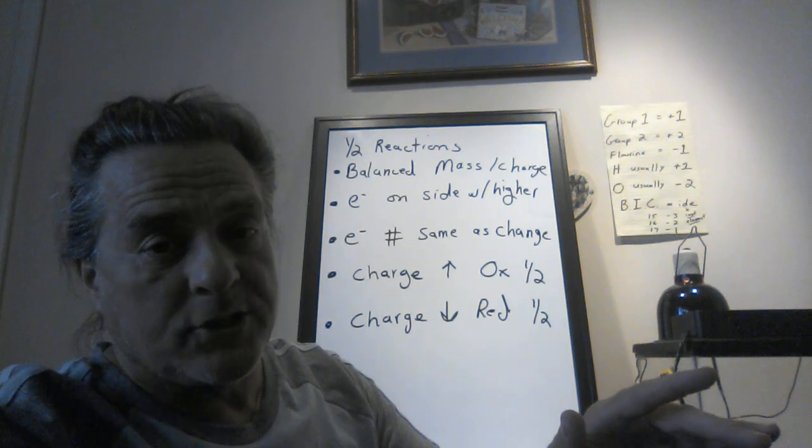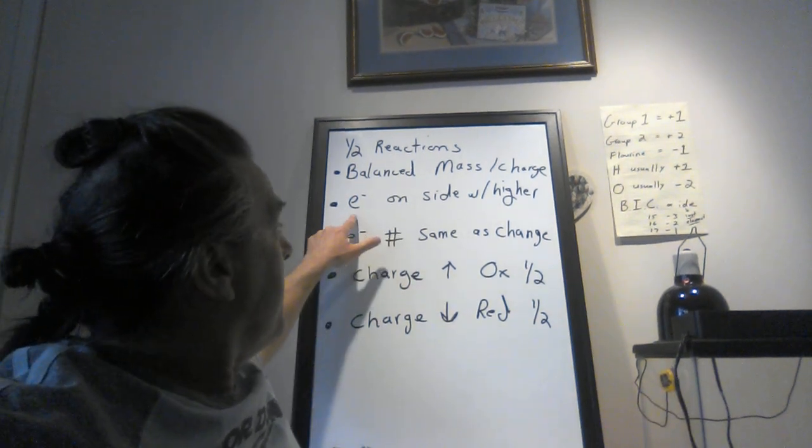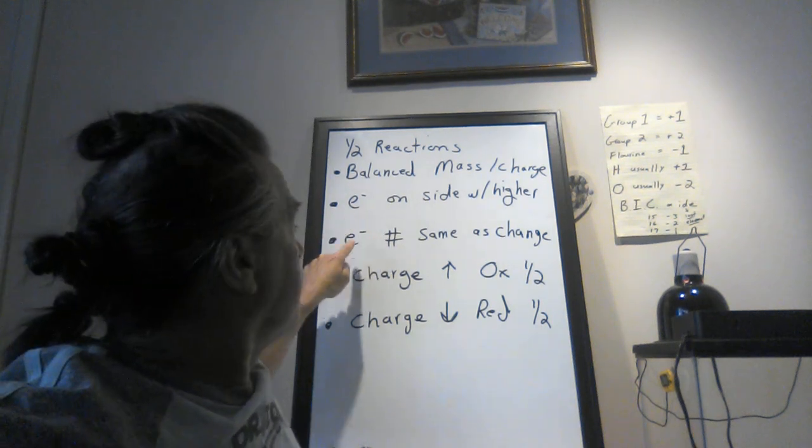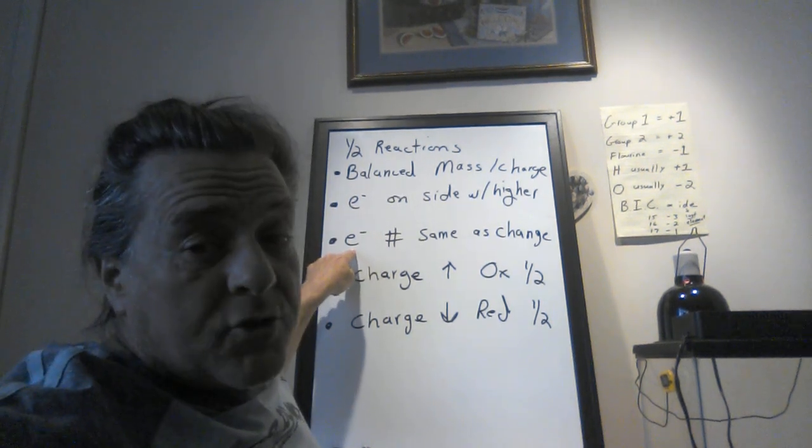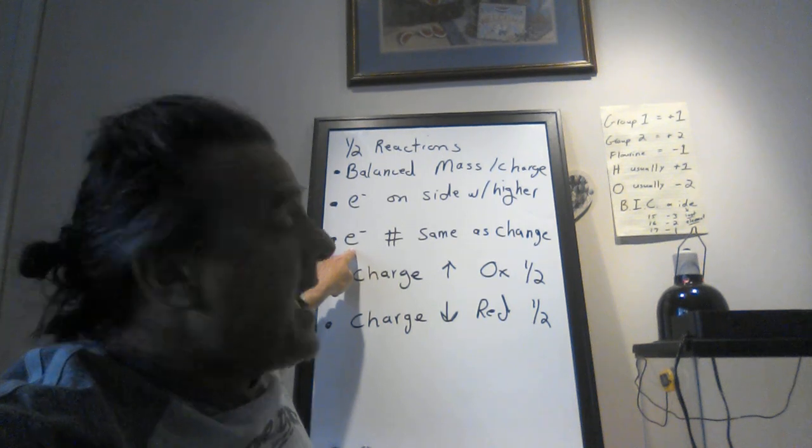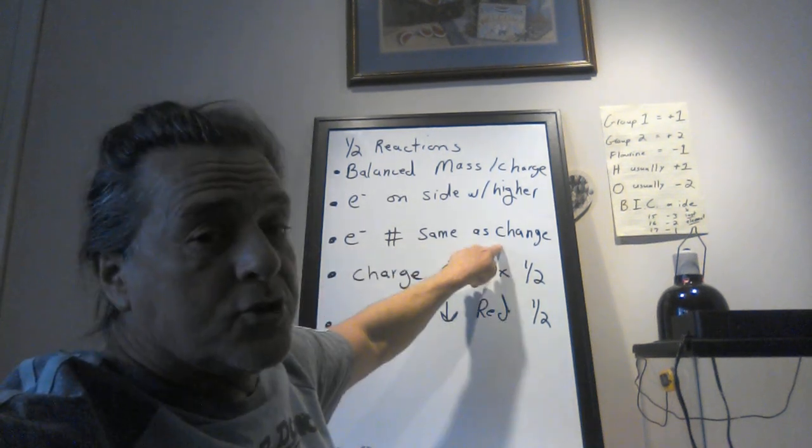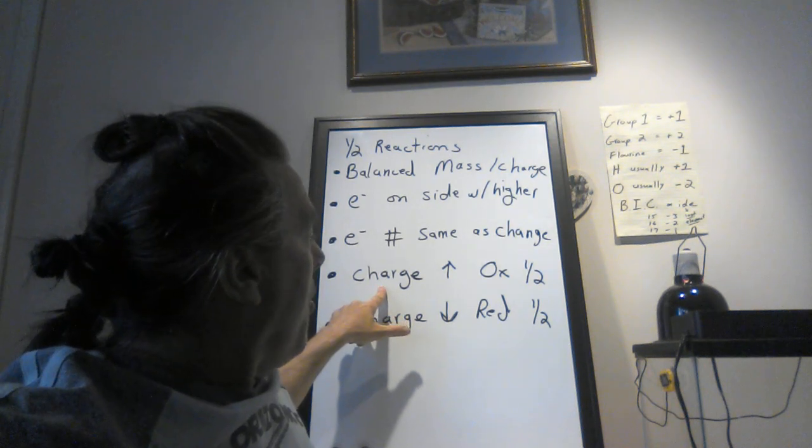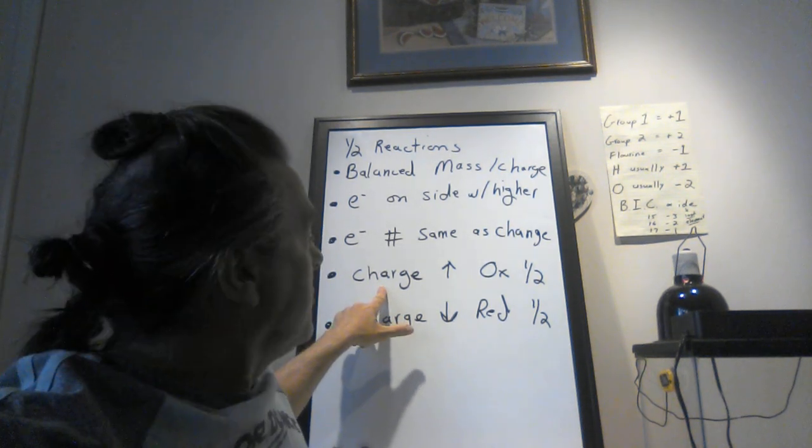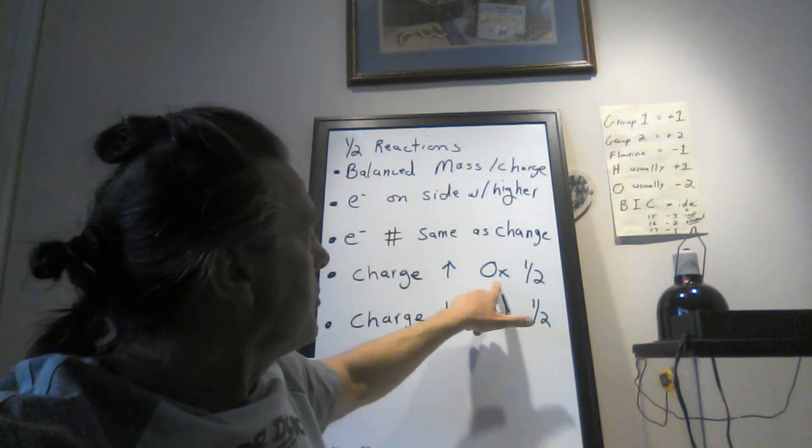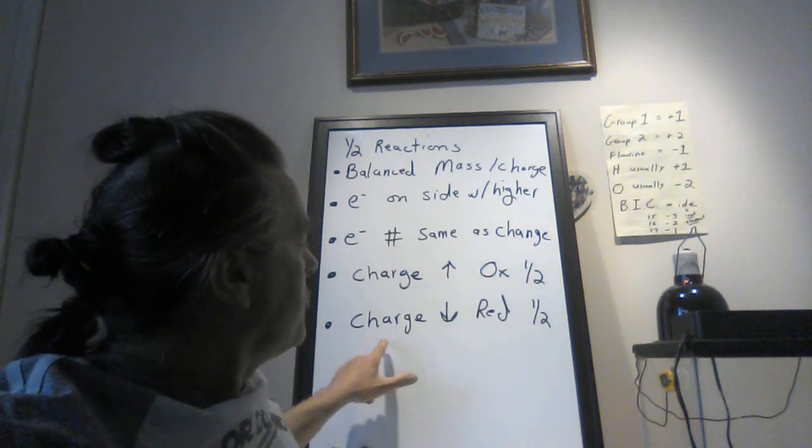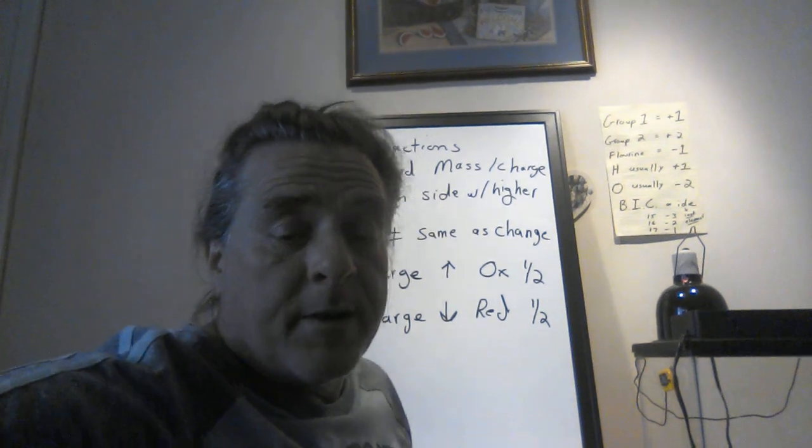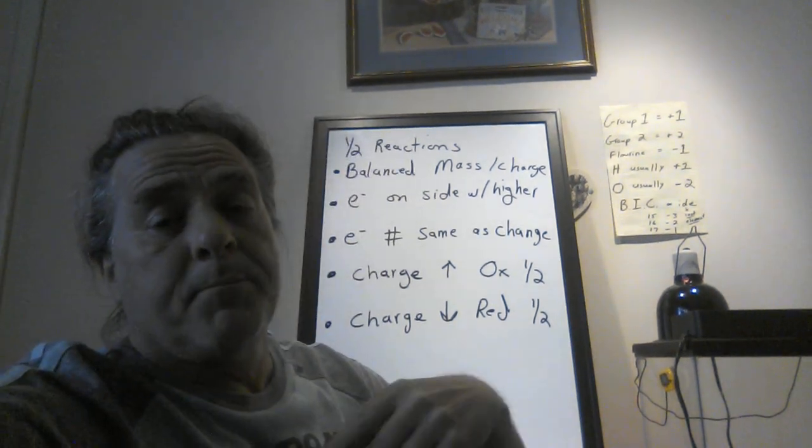Then you find the side that has higher charge. That's the side that gets electrons. The number of electrons that we're going to put in the half reactions are going to be the same as the change in charge. If we're going to call the reaction oxidation, charge is going up. Charge goes up in the oxidation half, charge goes down in the reduction half. I'm going to give you an example of one, and we're going to label it, put in electrons, balance it, and then determine whether it's oxidation or reduction half.